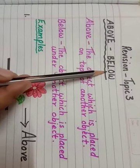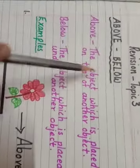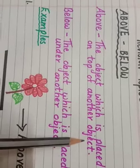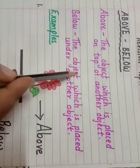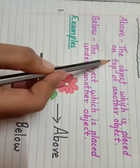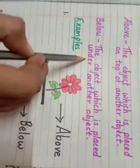Above and Below. Above means the object which is placed on top of another object. Below means the object which is placed under another object. Top means upar. Under means niche.